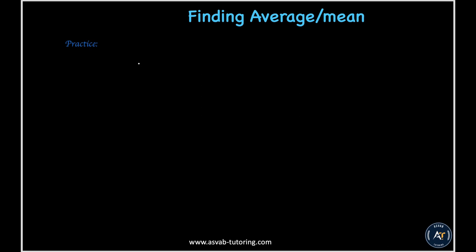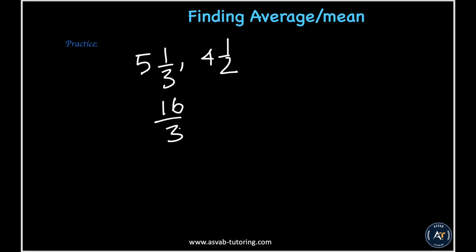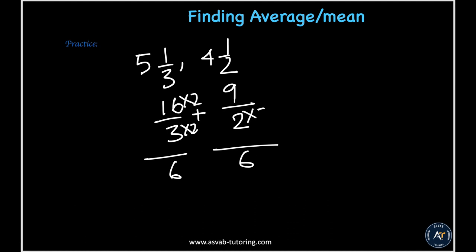Now find the average of two mixed numbers: 5 and 1/3, and 4 and 1/2. Convert to improper fractions: 5 times 3 is 15, plus 1 is 16/3; 4 times 2 is 8, plus 1 is 9/2. Find the common denominator of 6: multiply 16/3 by 2/2 and 9/2 by 3/3. That gives 32/6 plus 27/6 equals 59/6.